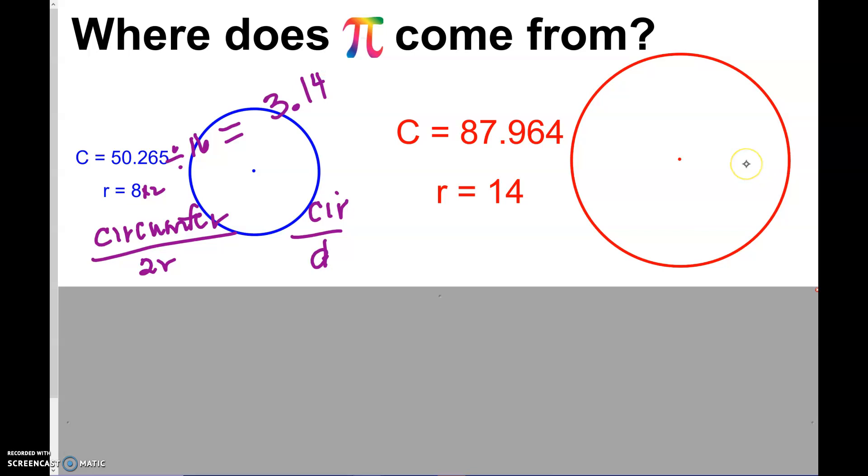So now we have a bigger circle that has a radius of 14. So if we take that circumference, 87.964, and divide by your diameter, which would be 14 times 2 or 28, you are never going to guess what we're going to get. 3.14.